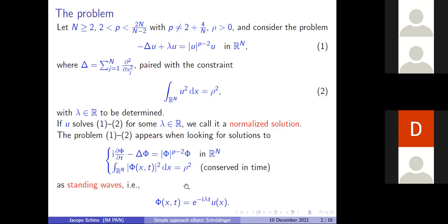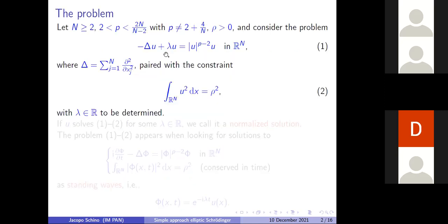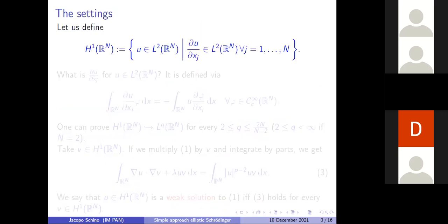The Schrödinger equation has many physical applications, and in all these fields this quantity has a precise meaning — another reason why we want to prescribe the L2 norm a priori. I have now explained everything in the title you might not know, except for what a "solution" means. You might think it is a C² function such that the identity is satisfied everywhere on R^n. This is true in the end, but today we will also see a new notion of solution — and to do that, we need some preliminaries.